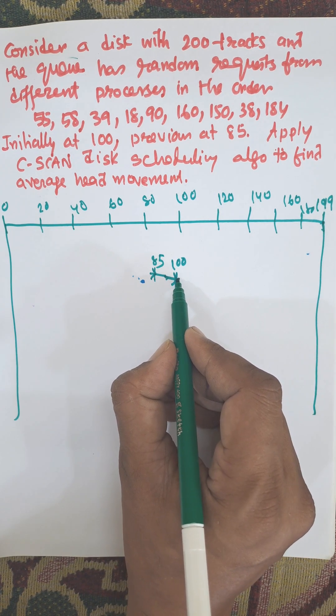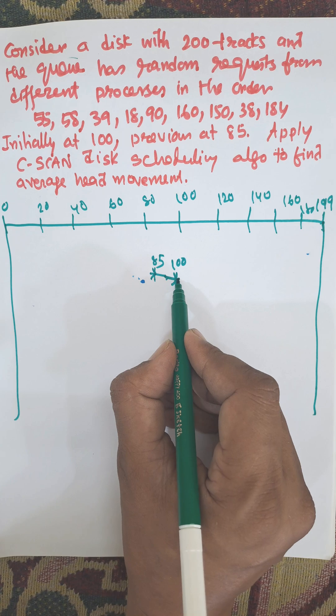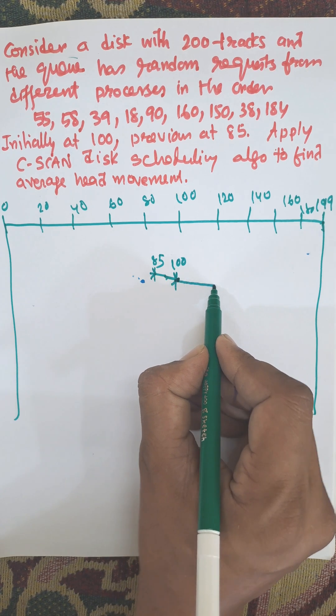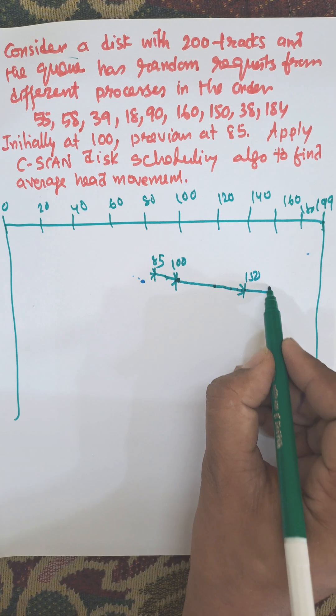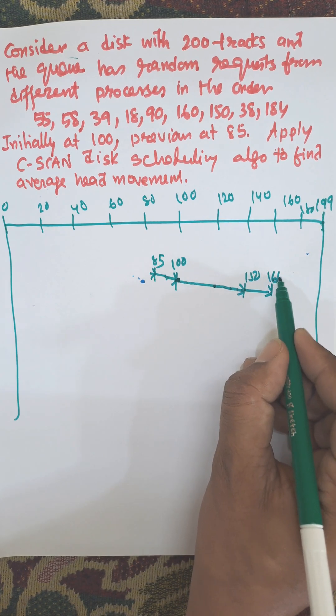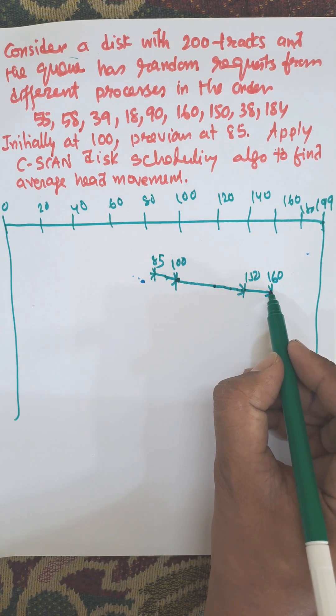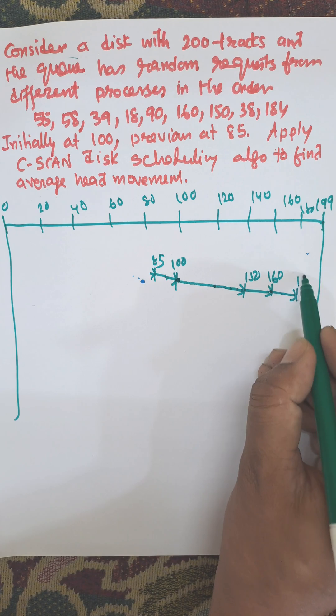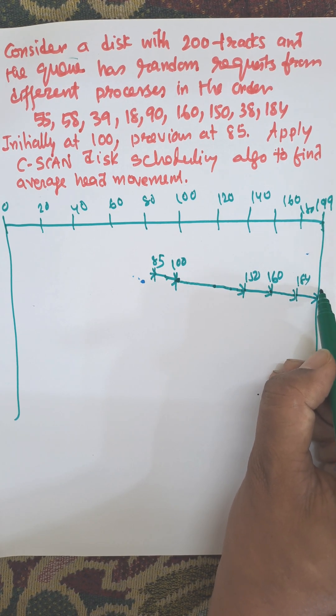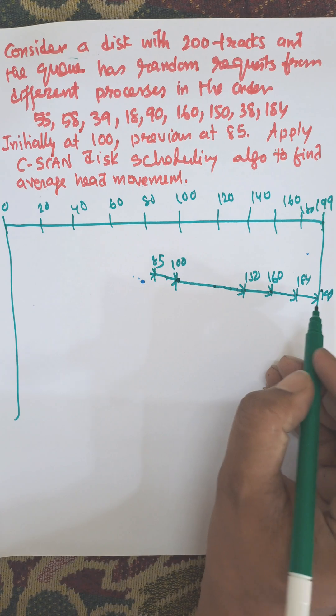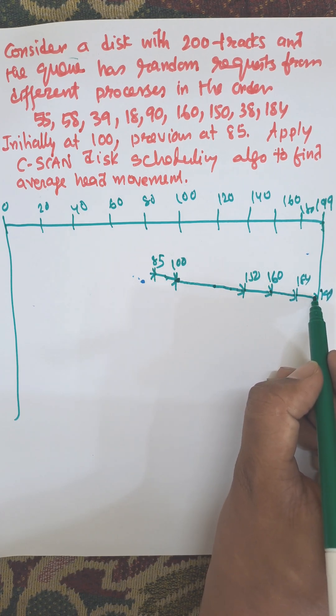So first of all 100, then we will choose the next path that is 150, then we will choose 160, moving toward the 199. Next one is 184, then it will access the last one, that is 199, then return from this.